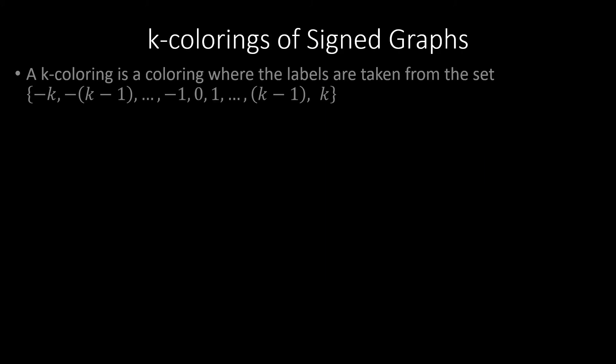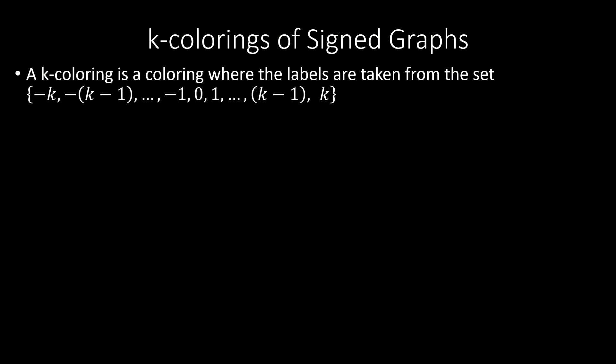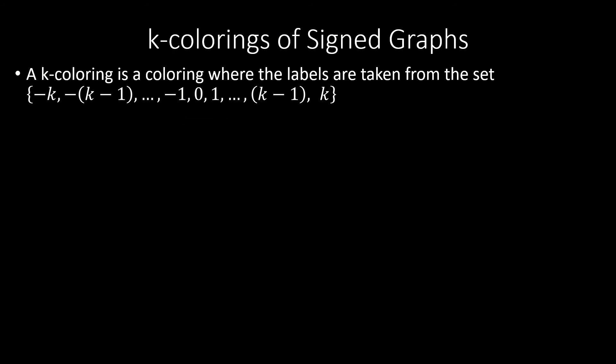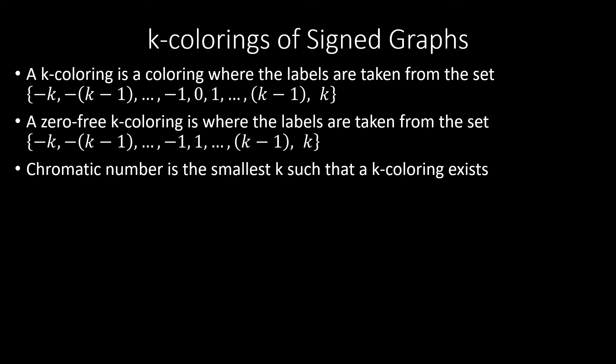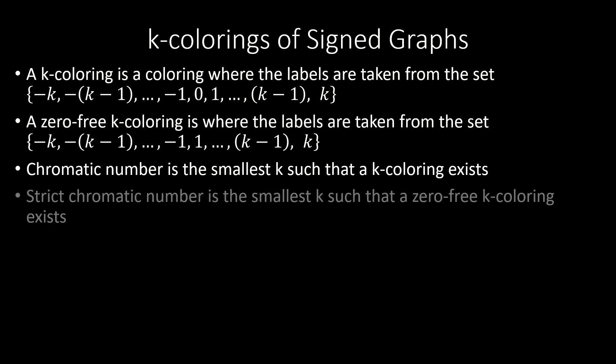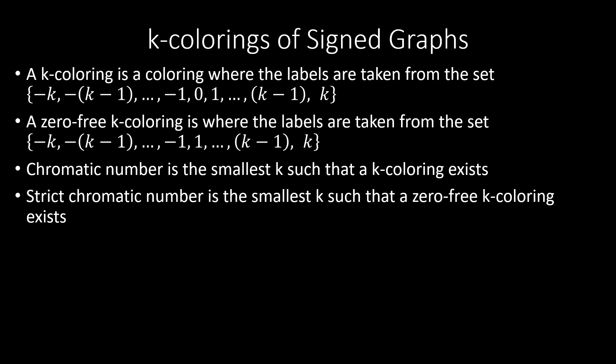Moving on, a K-coloring of a sign graph is a coloring where the labels are taken from the set of all integers whose magnitude is less than or equal to K. This is really a set of 2K plus 1 labels. A zero-free K-coloring is taken from the same set except with 0 excluded, which is really a set of 2K labels. The chromatic number of a signed graph is the smallest positive integer K such that there exists a K-coloring, and the strict chromatic number is the smallest positive integer K such that there exists a zero-free K-coloring.